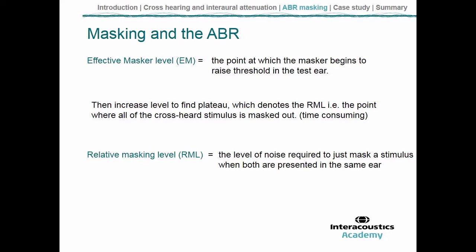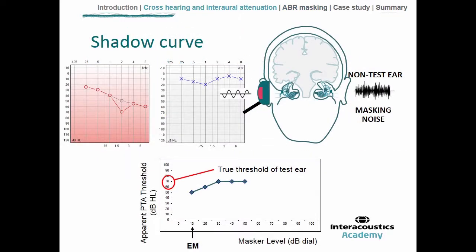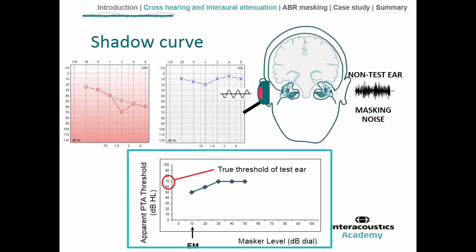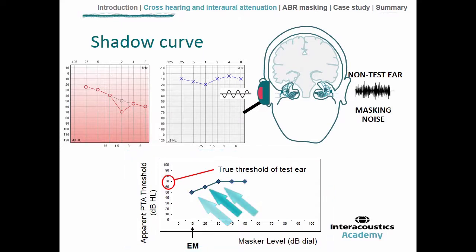Going back to the previous slide: when we measure this masking function in pure tone audiometry, it's a relatively low time penalty to measure all these different points on the masking function, because each time you present a signal with the masker in place, it's just the time taken for the patient to respond with a button press. But in auditory brainstem response testing, each individual threshold takes several minutes to compile enough averages to decide whether a response is present or absent.